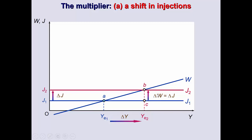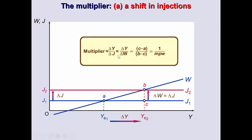In terms of the formula, the multiplier equals ΔY/ΔJ, which also equals ΔY/ΔW (in the case of a decline in W). This is the simple multiplier formula. To calculate the value, we take the change in income (C minus A on the graph) over the change in injections — the gradient-based calculation leads us to the result that the multiplier equals 1/MPW, the marginal propensity to withdraw.